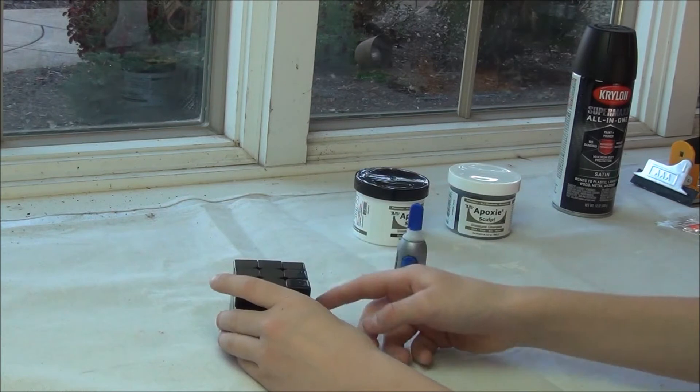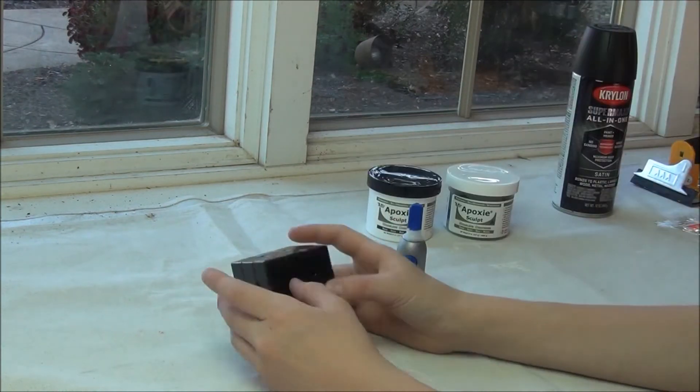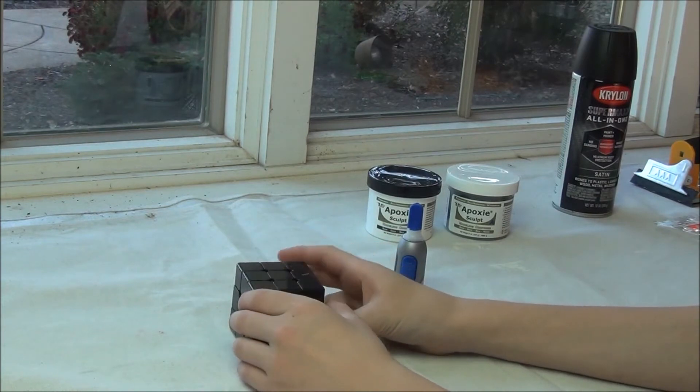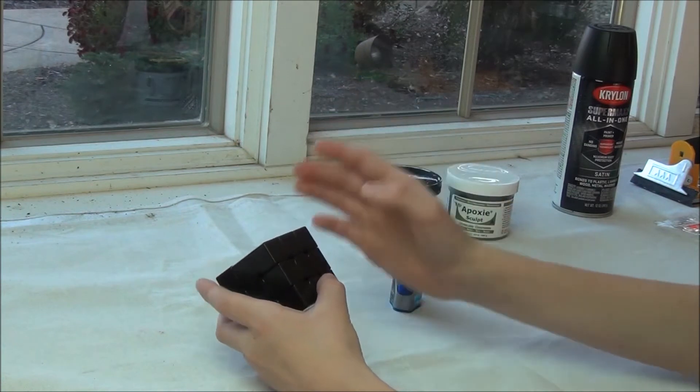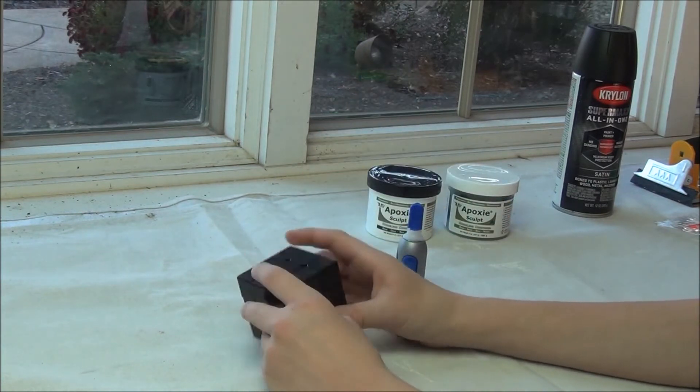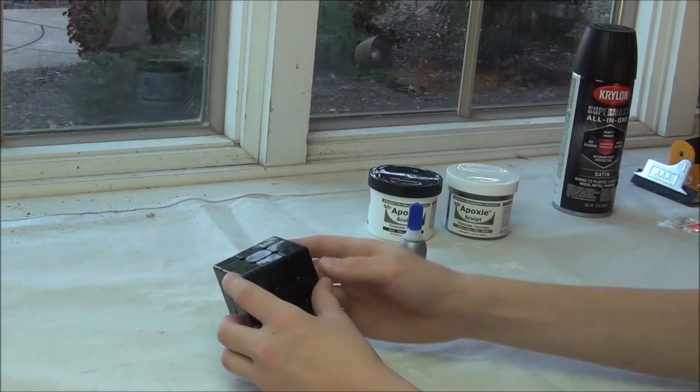So we need to super glue this 2x2 block together, fill the pieces with epoxy sculpt. In the video Nathan Wilson used baking soda and super glue, although he would have preferred epoxy sculpt. He did this to show that you don't need epoxy sculpt to produce a bandage modification. But to make a better quality puzzle, I'm going to go ahead and use epoxy sculpt.